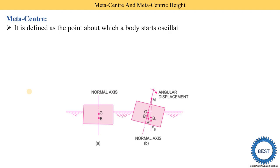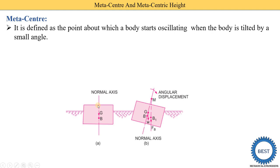Metacenter is defined as the point about which a body starts oscillating when the body is tilted by a small angle. Here in this figure we see this is a body — the body shape is rectangular — and from its axis when we apply a small angular displacement to the body, the body starts oscillating. Oscillating means, like a pendulum oscillates about one point, similarly this body moves from the m point to the left and right side. This is called oscillating motion. So the metacenter point is this m point, and about this m point the body oscillates.